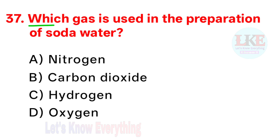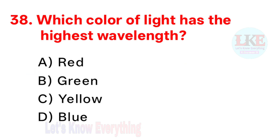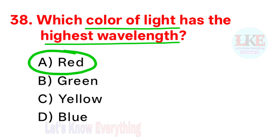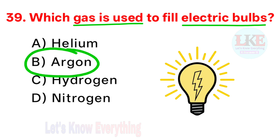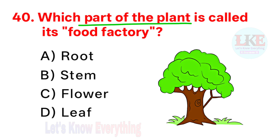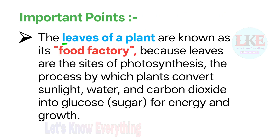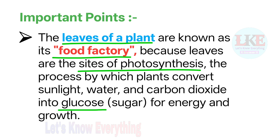Question number 37: which gas is used in the preparation of soda water? Right answer option B: carbon dioxide. Question number 38: which colour of light has the highest wavelength? Right answer option A: red. Question number 39: which gas is used to fill electric bulbs? Right answer option B: argon. Question number 40: which part of the plant is called its food factory? Right answer option D: leaves. The leaves of a plant are known as its food factory because leaves are the sites of photosynthesis, the process by which plants convert sunlight, water, and carbon dioxide into glucose for energy and growth.